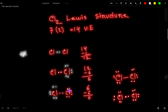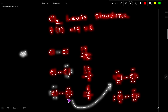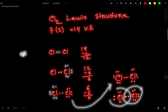This is the Lewis structure of Cl₂. We can also express the bond pair as a dash. Now this chlorine has eight valence electrons and this chlorine has eight valence electrons. In the Cl₂ Lewis structure, both chlorine atoms follow the octet rule.